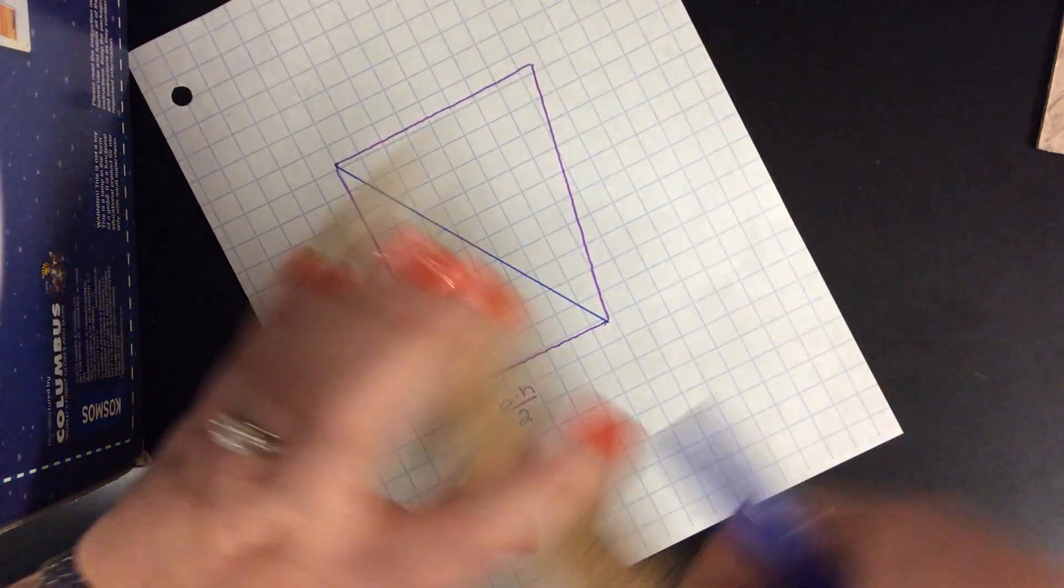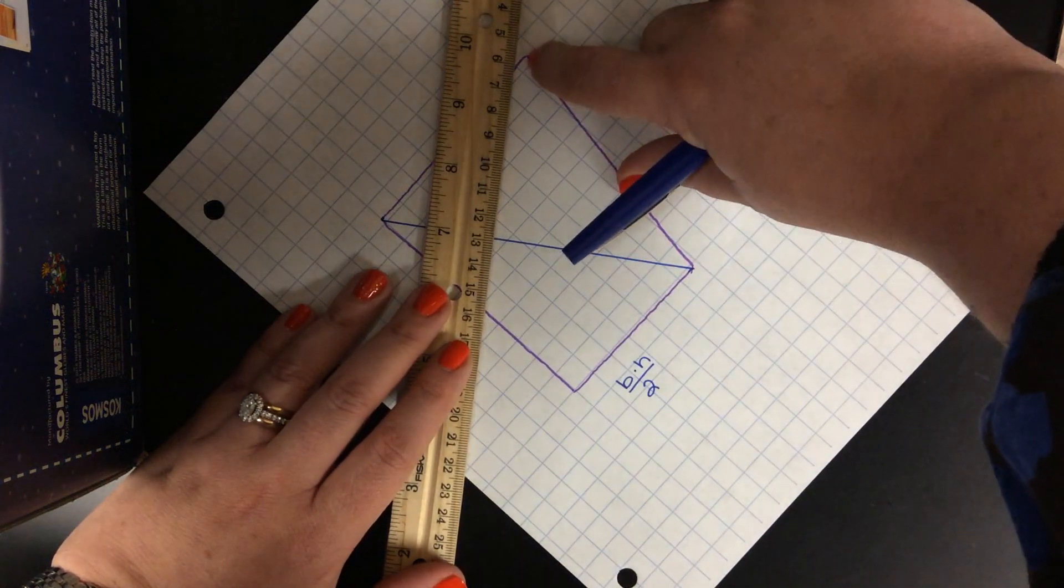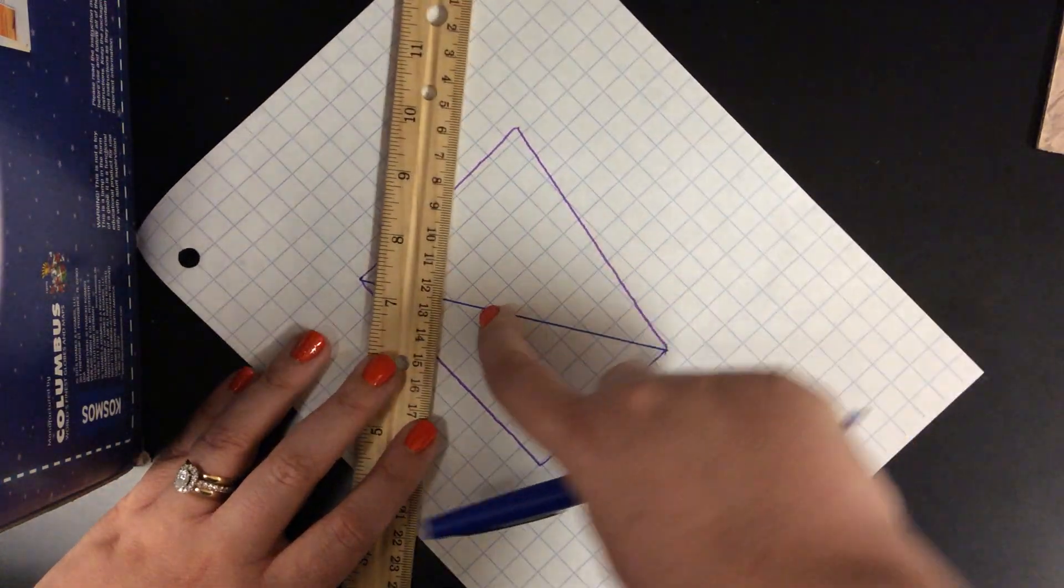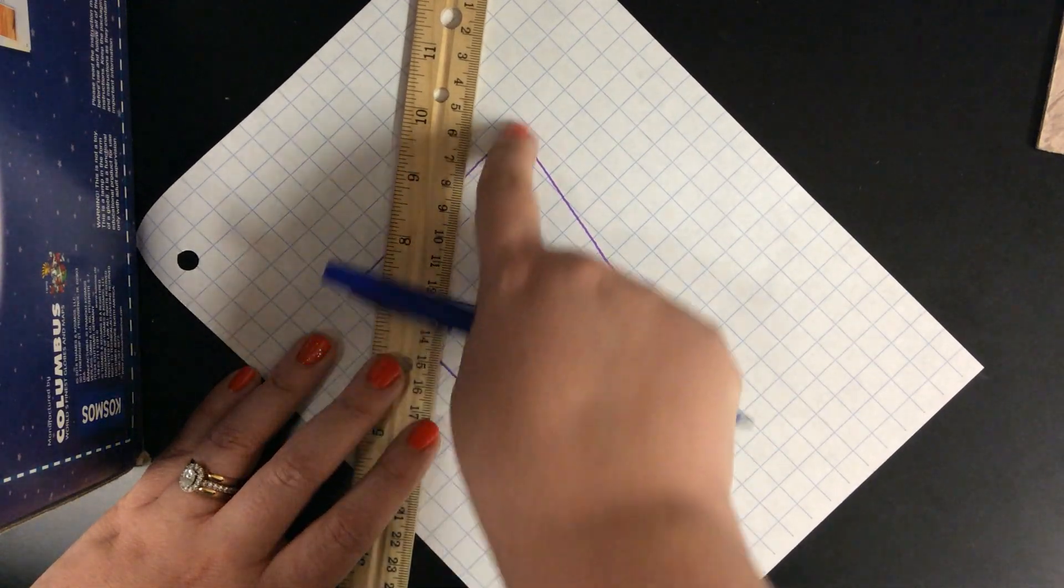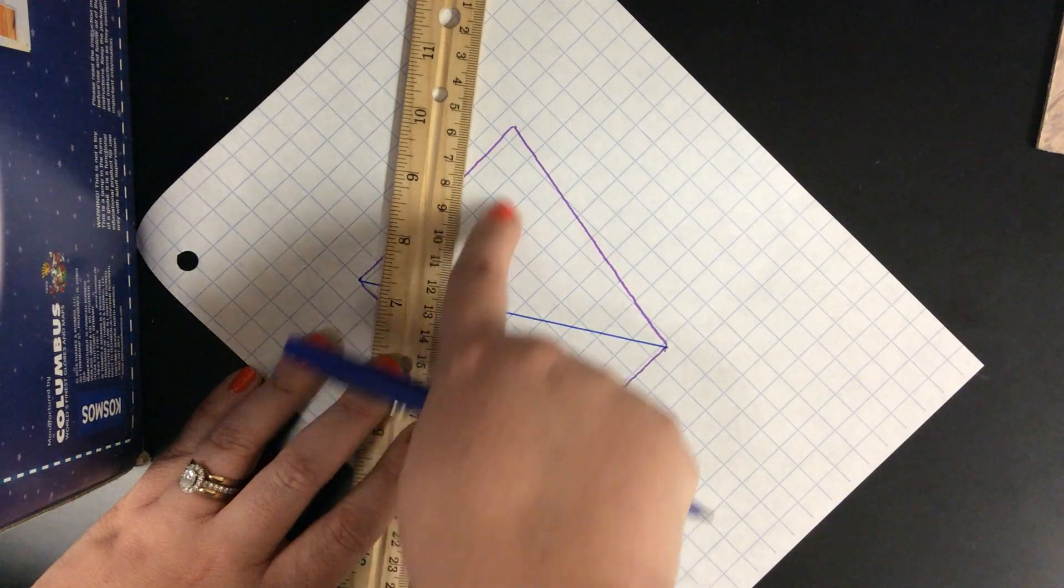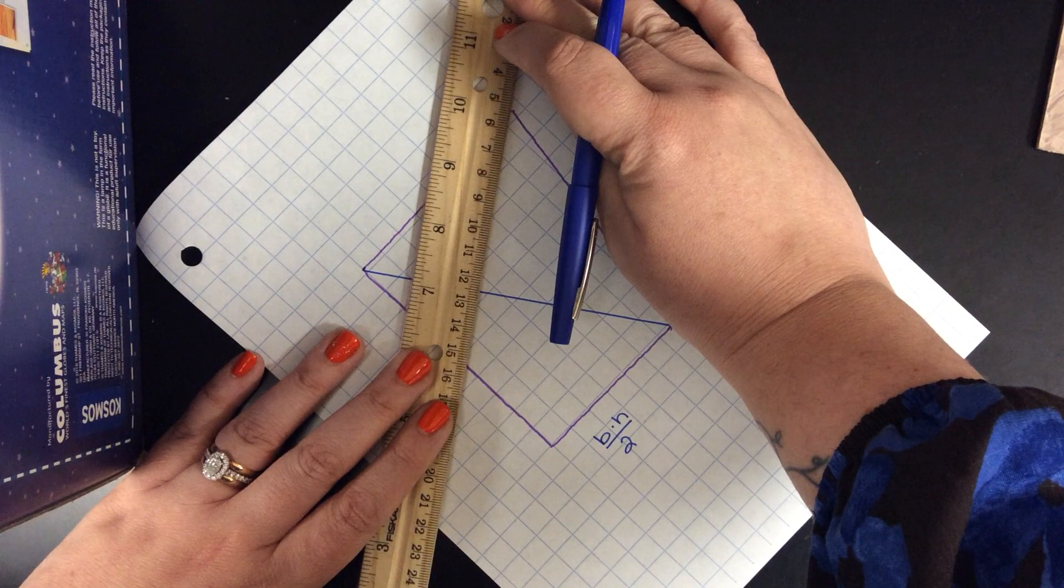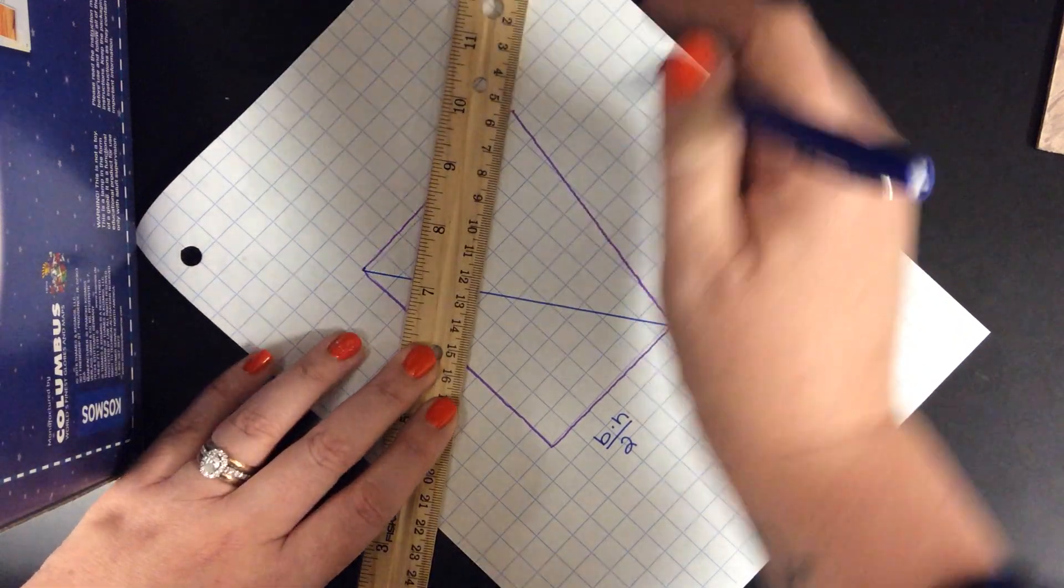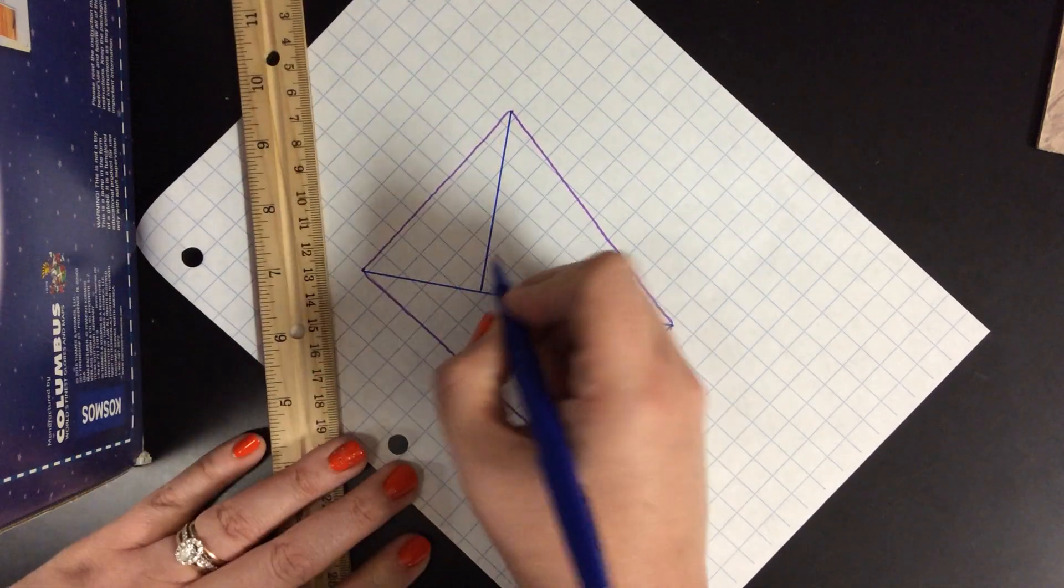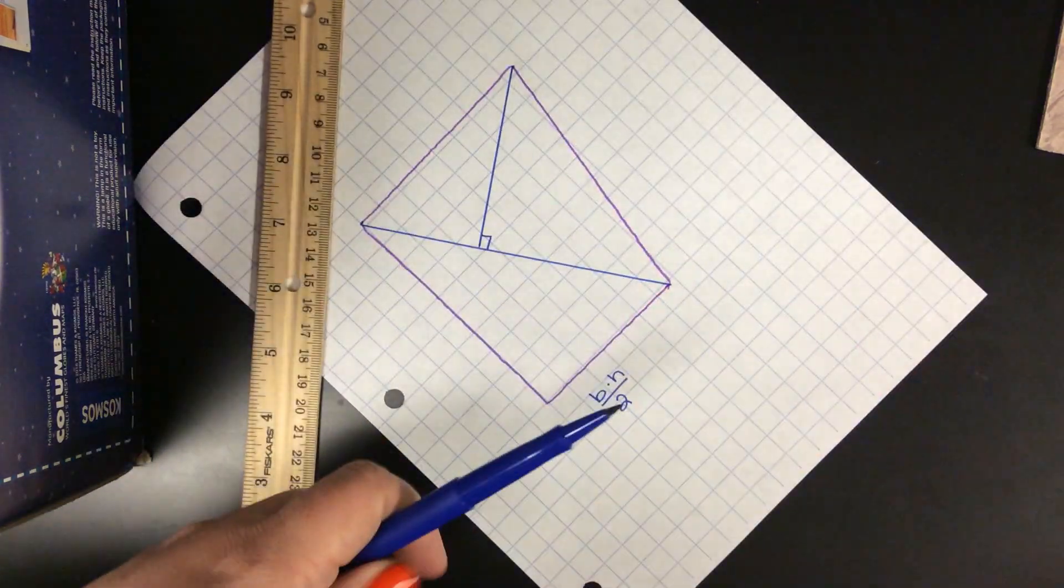So in this case, I would take my ruler and I want to draw a line from this corner to this base, to this line right here, and have it make a right angle. I want it to be a perpendicular line. So I have to be really, really careful when I line up my ruler and make it as straight as possible. And I'm going to draw my line in right here. That's just to remind myself that's what I've got.